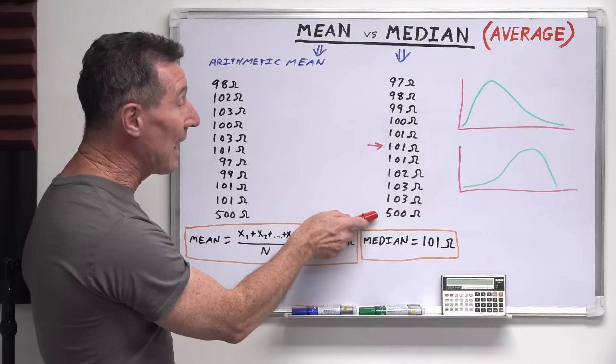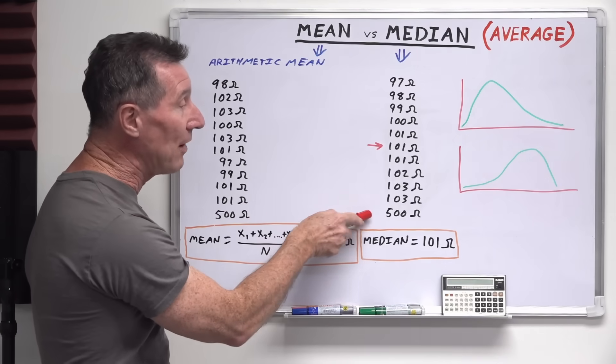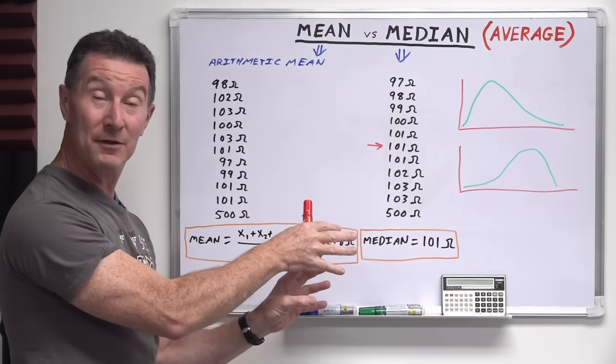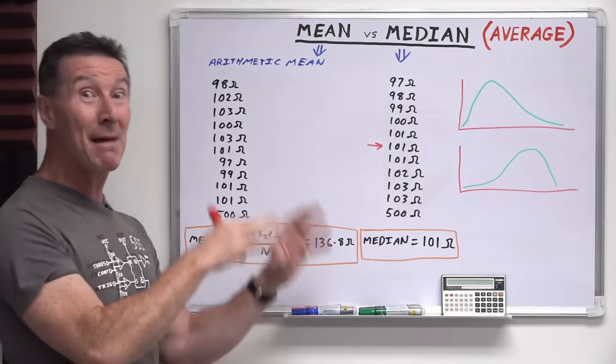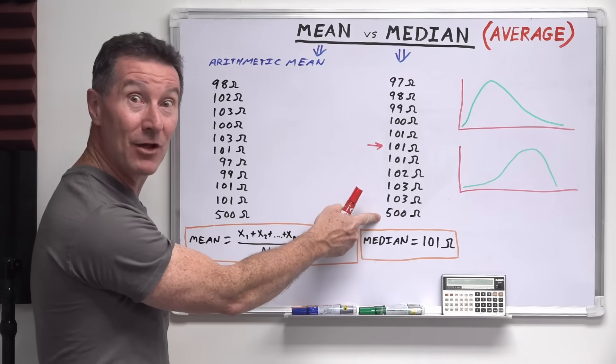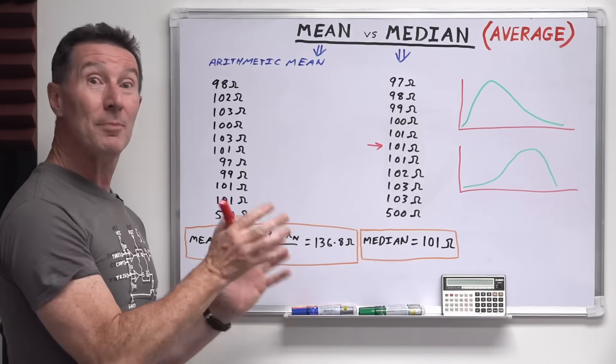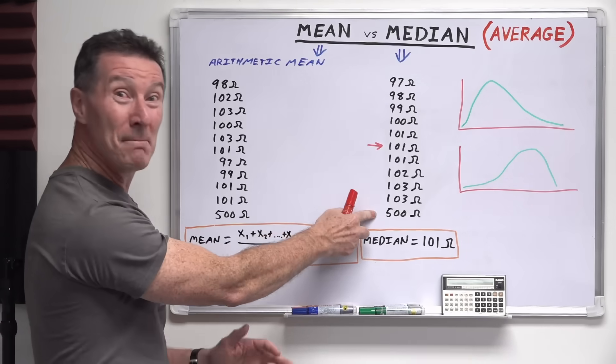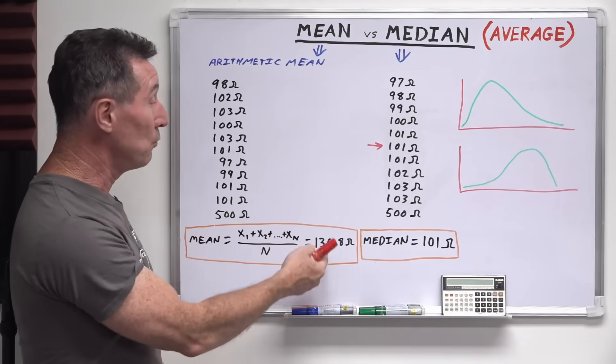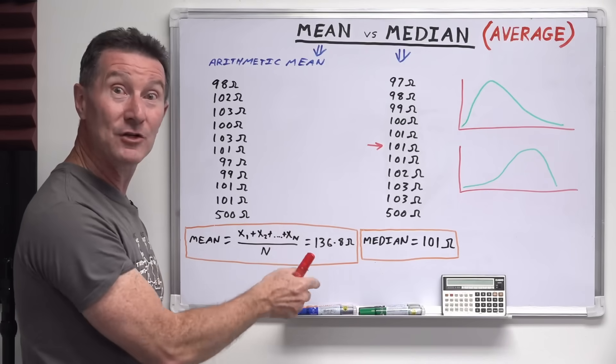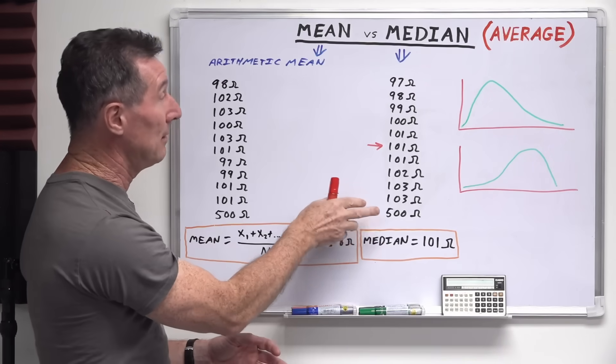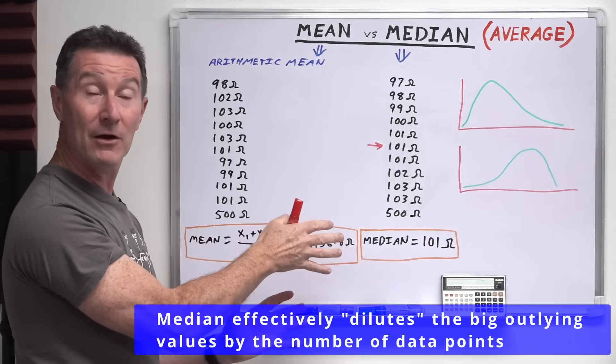So the advantage this gives is that it pushes these outlier values right out to the end, because you typically don't have many of these outlier values. And they can be massive, this could be 500k or something like that, and it makes no difference. Or it could be a 500 million dollar mansion resort thing. That if we use the mean, it would have skewed that mean or average value right to the moon.